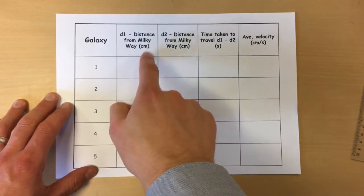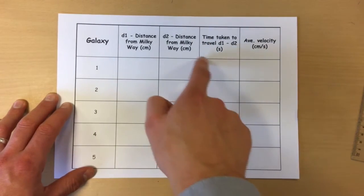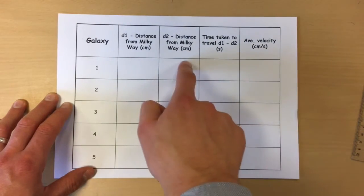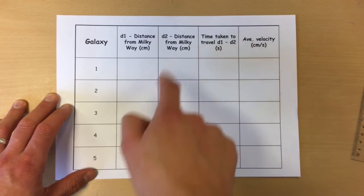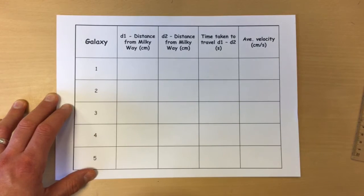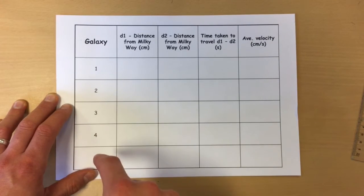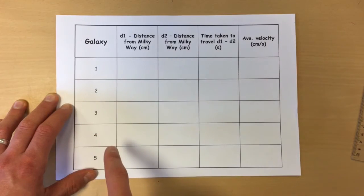So by now we should have this column, this column and this column complete. And what we're going to do is we're going to put all of this in an Excel sheet. And using everyone's results we're going to find the recessional velocity of each galaxy, 1 to 5. And we're going to see how they compare for the galaxy that's closest compared to the galaxy that's furthest away.